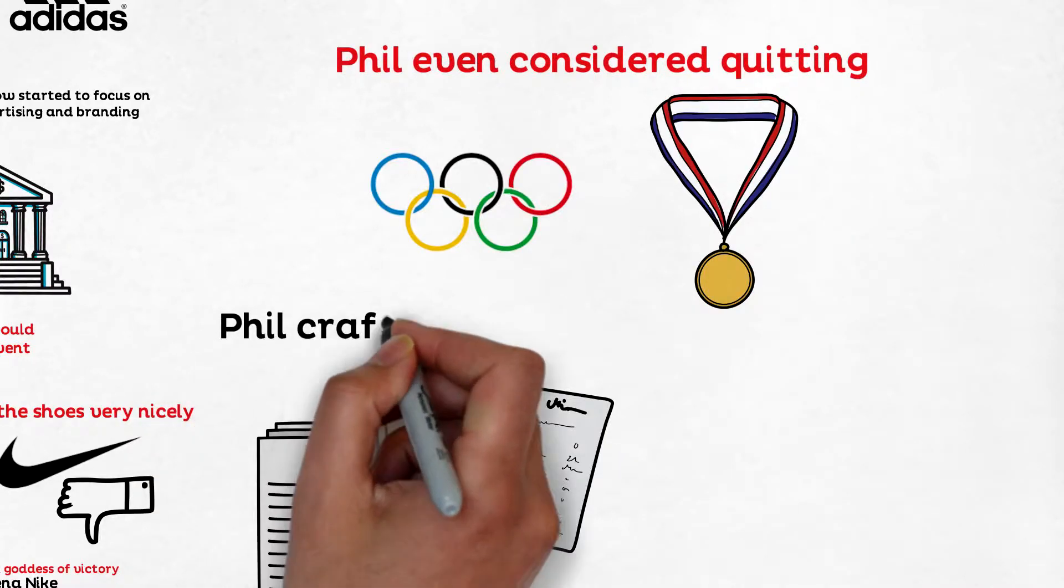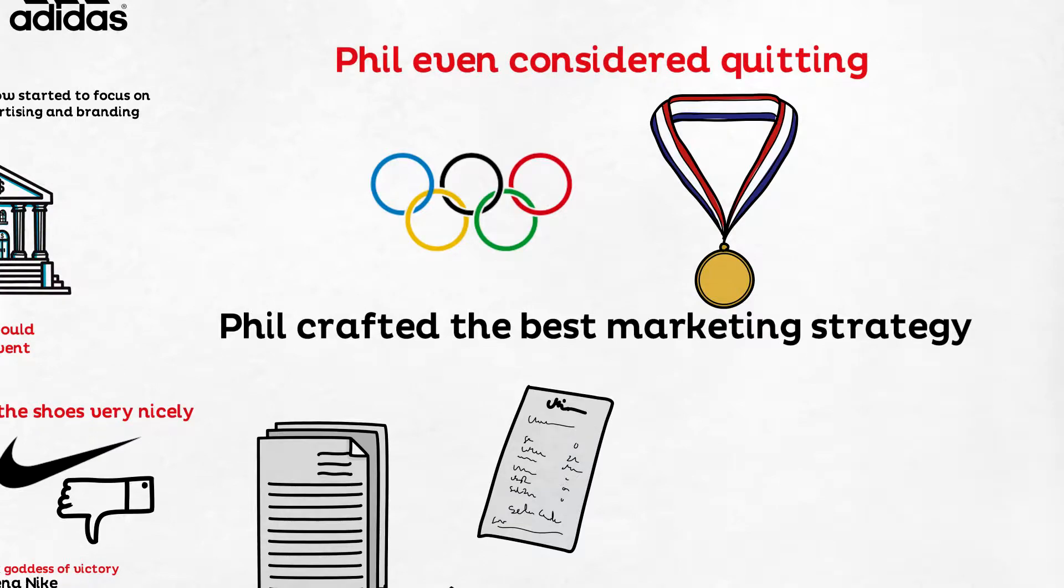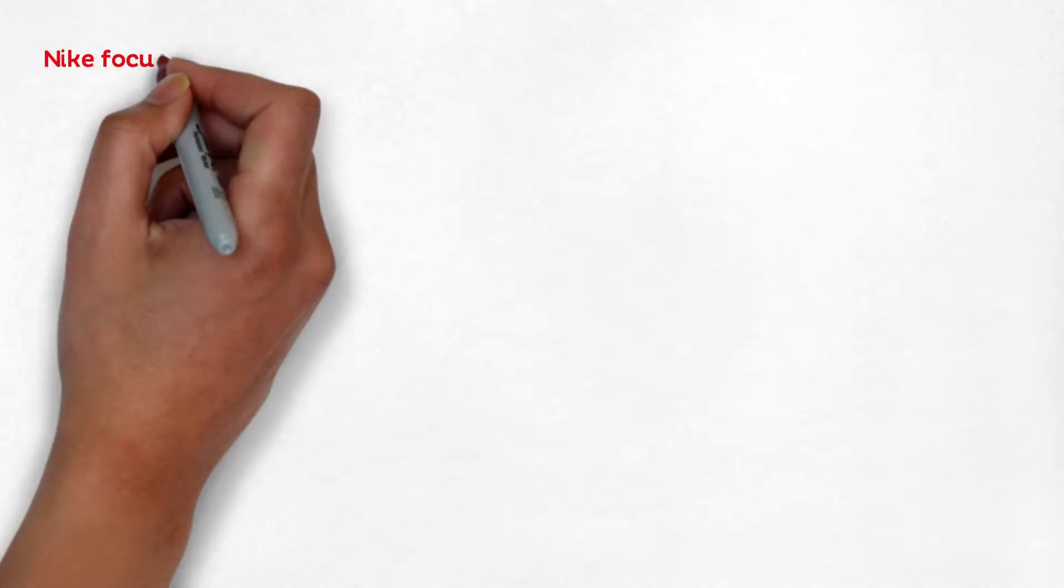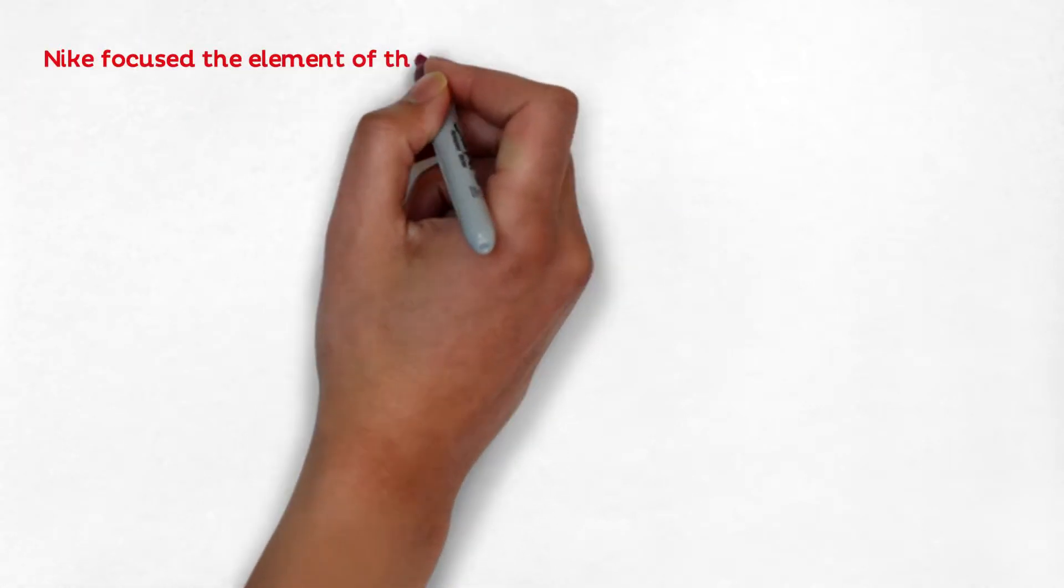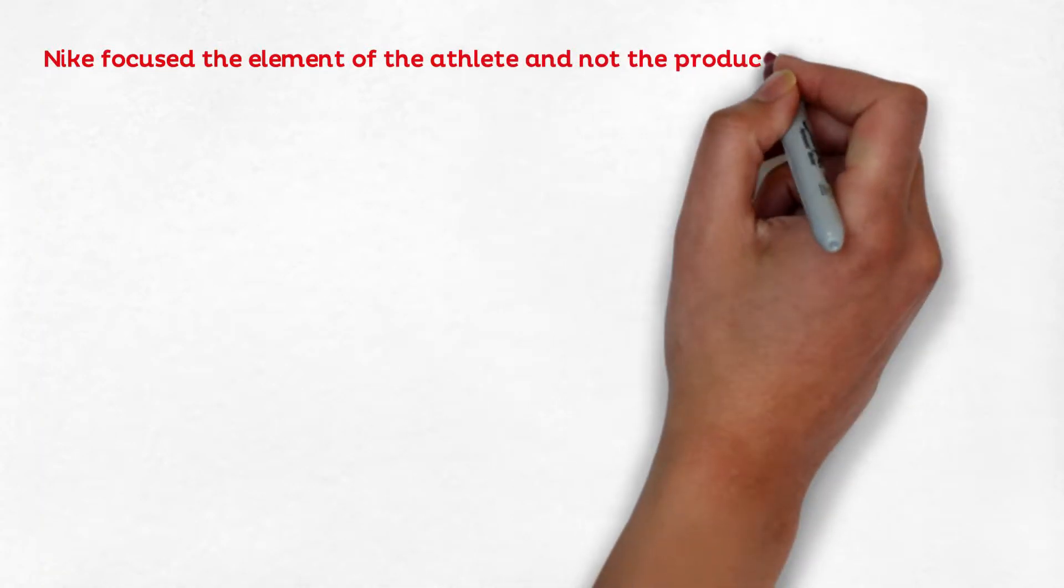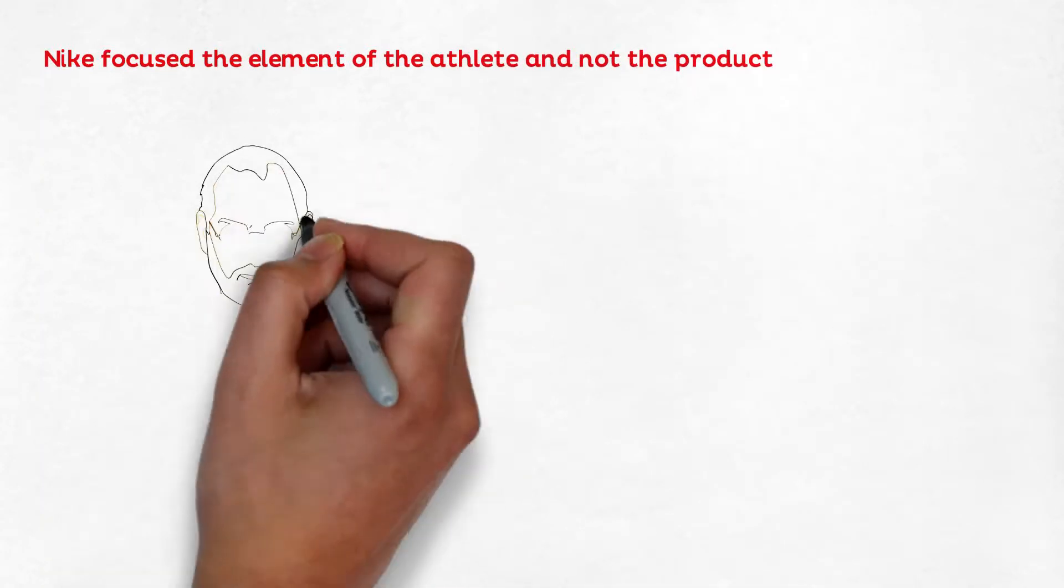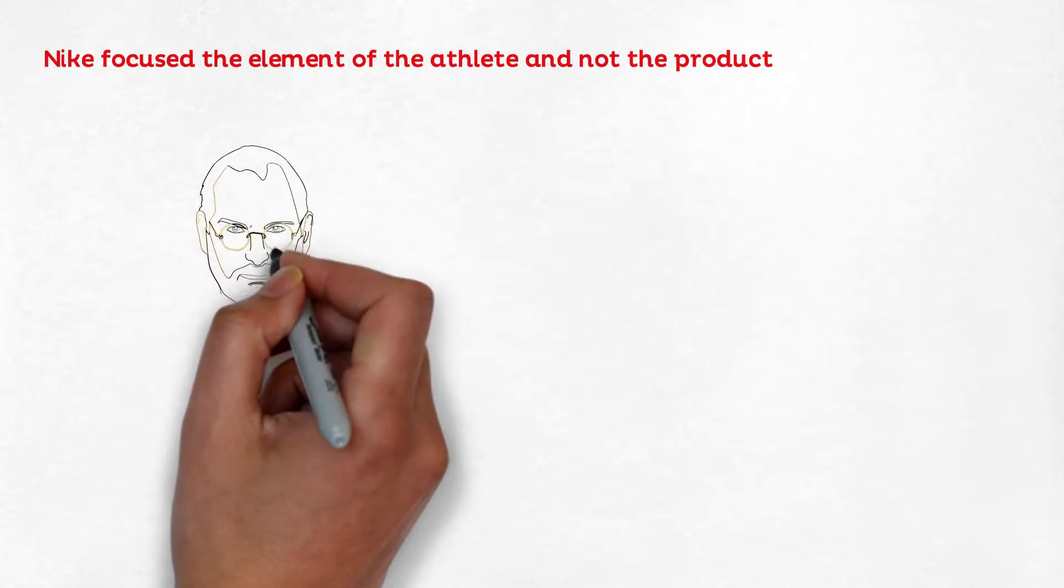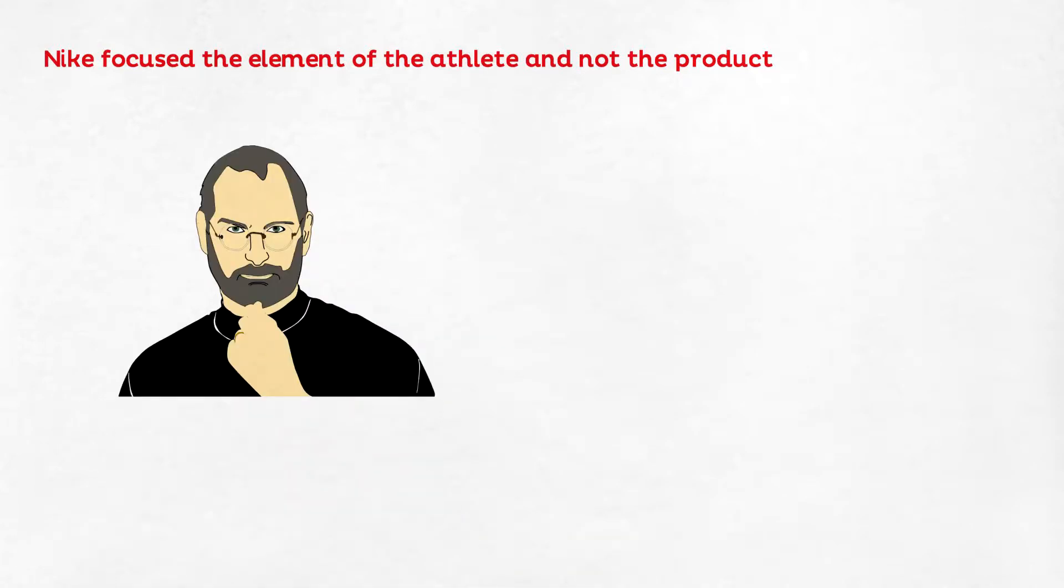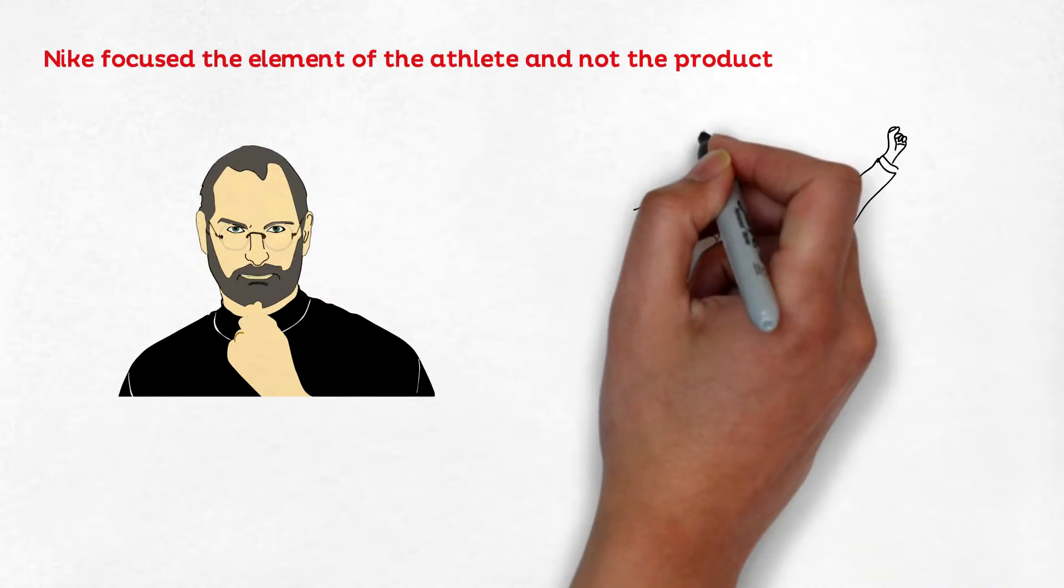Phil crafted the best marketing strategy. If you look at Nike's ads, Nike focuses on the element of the athlete and never advertises about the product. Steve Jobs was crazy about this marketing strategy. Phil beat all the lawsuits and came ahead victoriously.